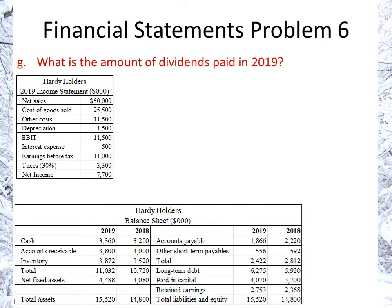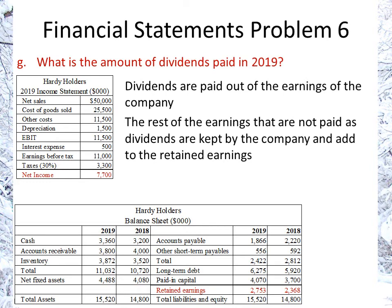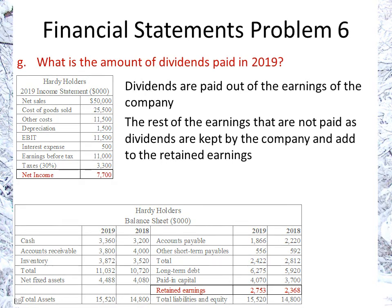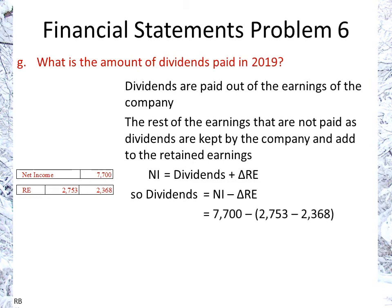For dividends paid, we don't have the figure directly, but we can calculate it indirectly. Net income goes to either dividends or retained earnings. The difference in retained earnings between end of 2018 and end of 2019 comes from net income. So dividends equal net income minus the change in retained earnings: $7,700 minus the difference between $2,753 and $2,368, giving $7,315 paid in dividends.